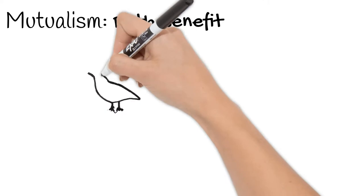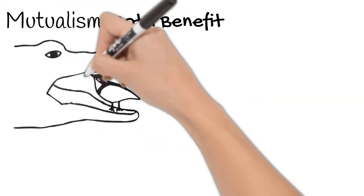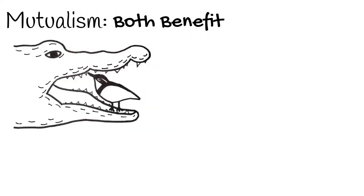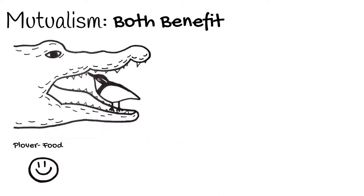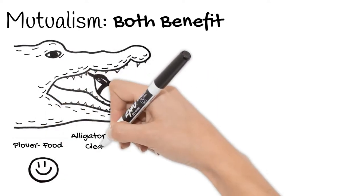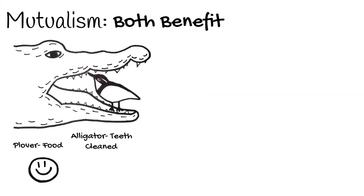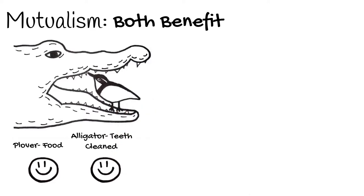There is a bird called a plover that cleans the teeth of alligators. Plovers get a meal from this, and alligators get food cleaned up from between their teeth. We all know how annoying food stuck in your teeth can be, so alligators like their personal flossers.